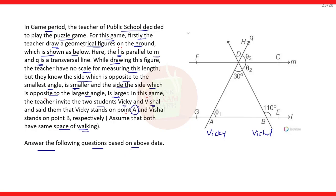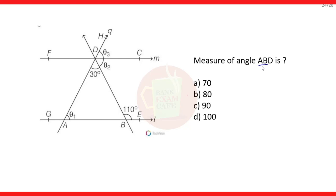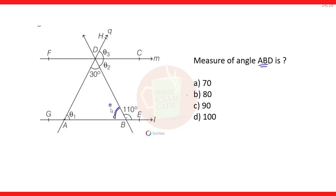Let us move to the first question: What is the measure of angle ABD? Here, angle ABD — we have to find this angle. It is very simple. We know that this is a linear pair, and the sum of a linear pair is always 180 degrees. You can find angle ABD orally — there is no need to do calculation because the sum is 180 degrees and this angle is 110 degrees, so this angle will be 70 degrees. The correct option is A, that is 70 degrees.